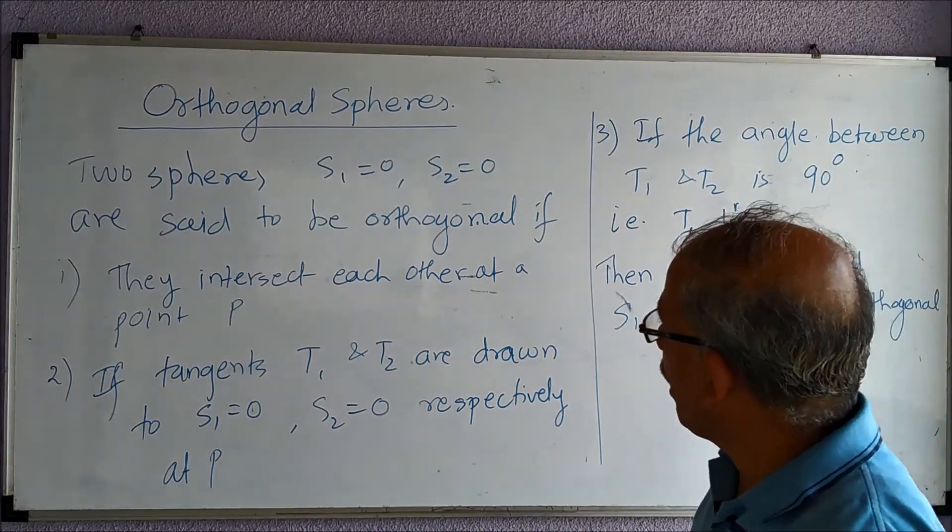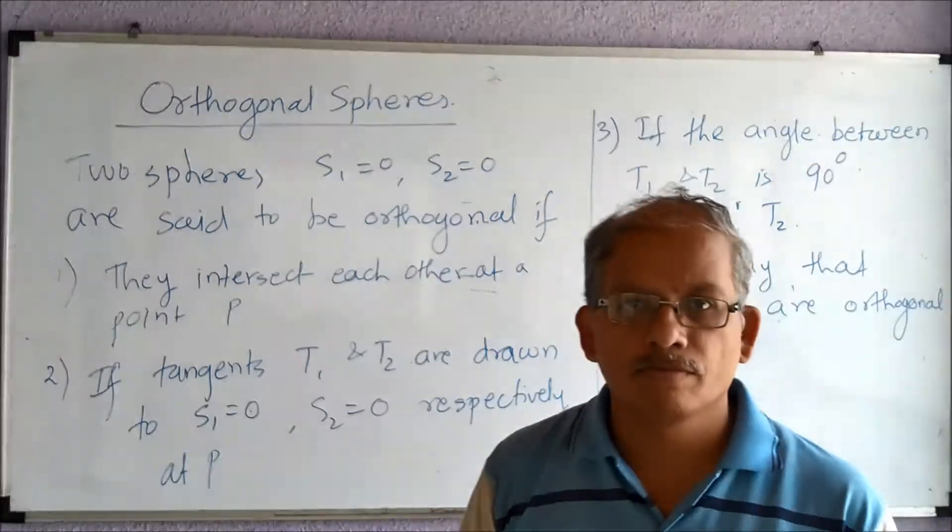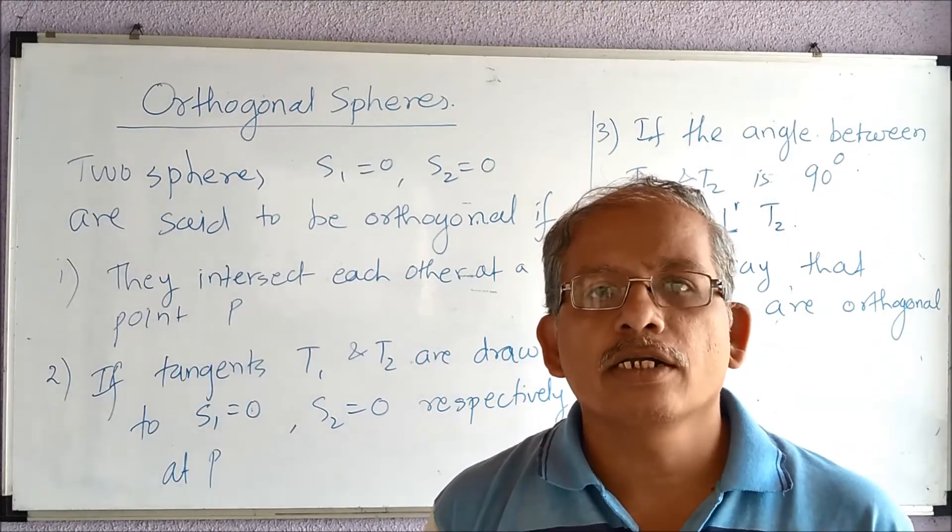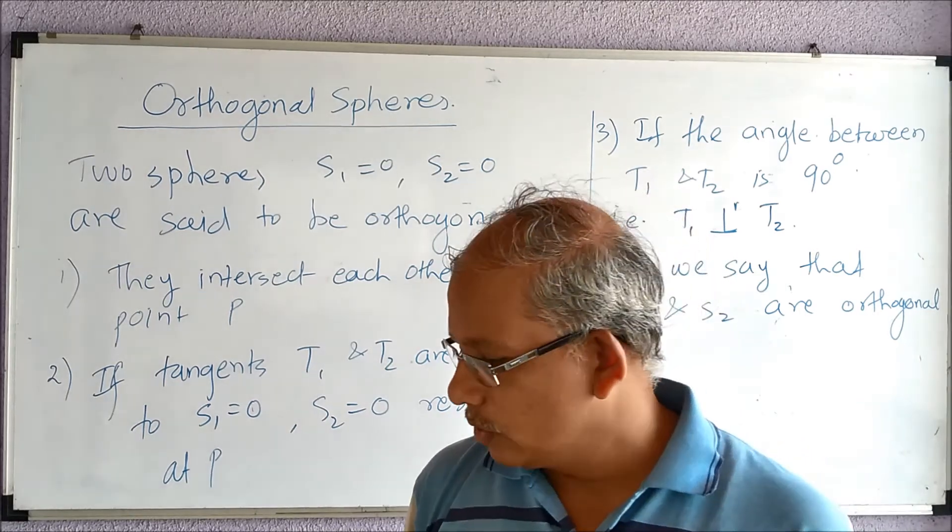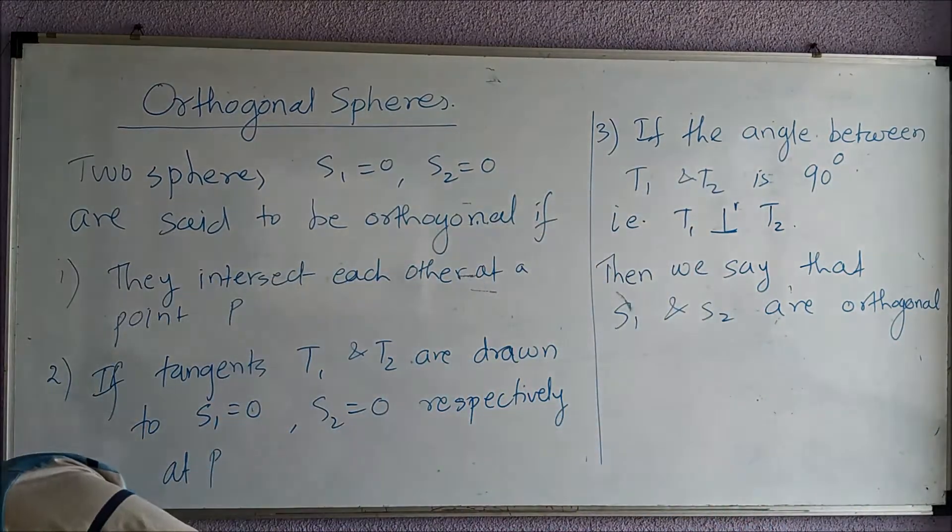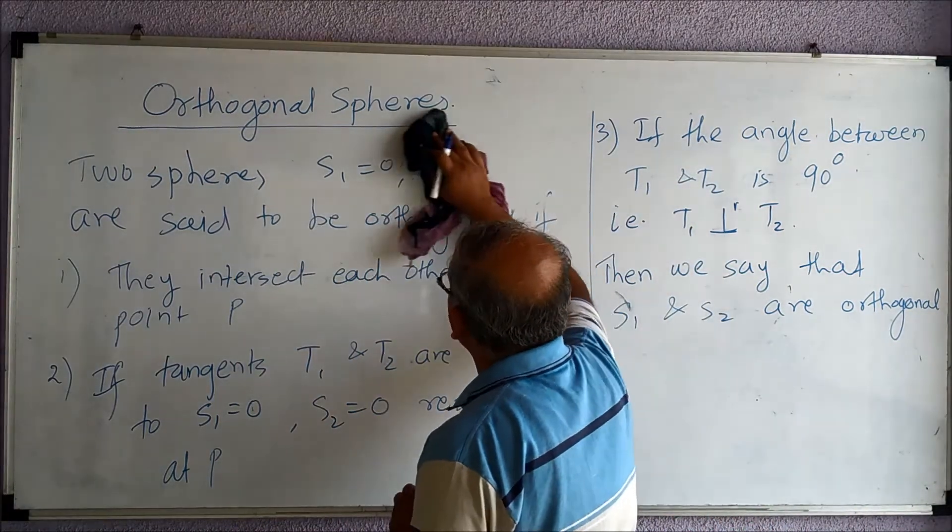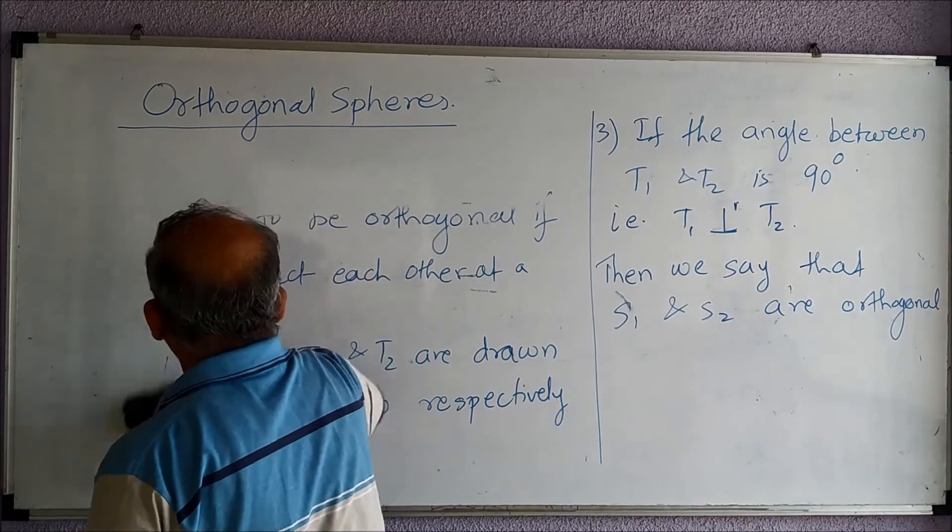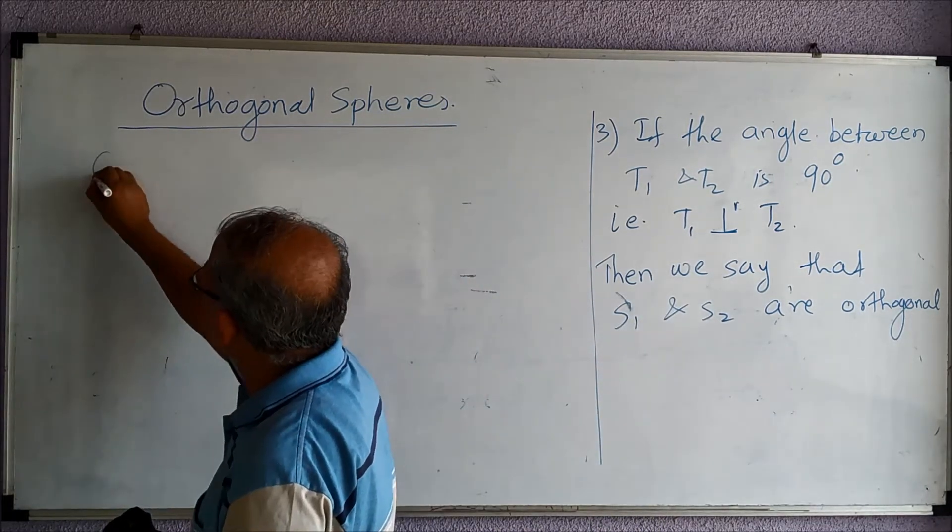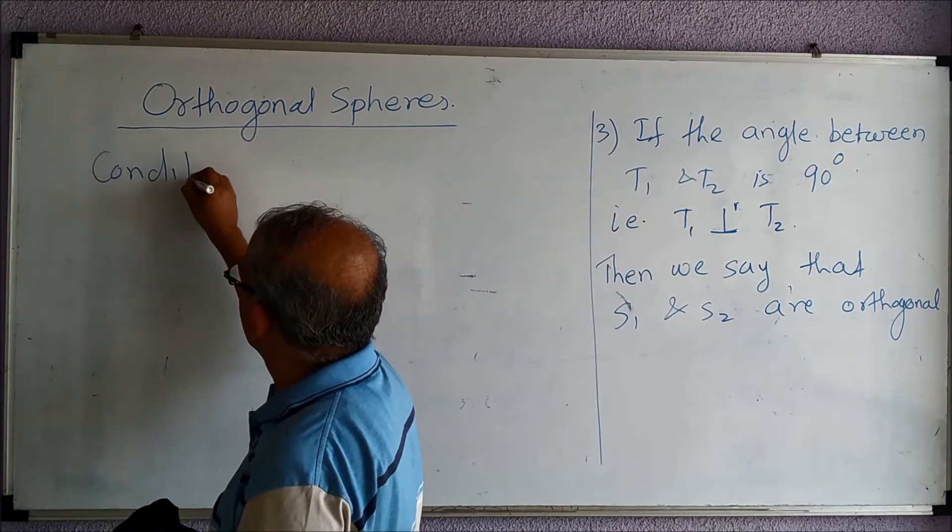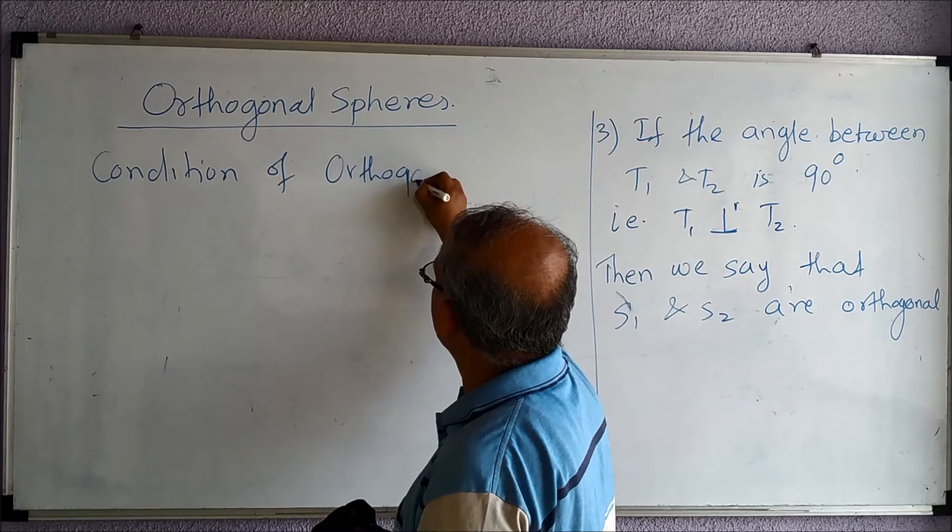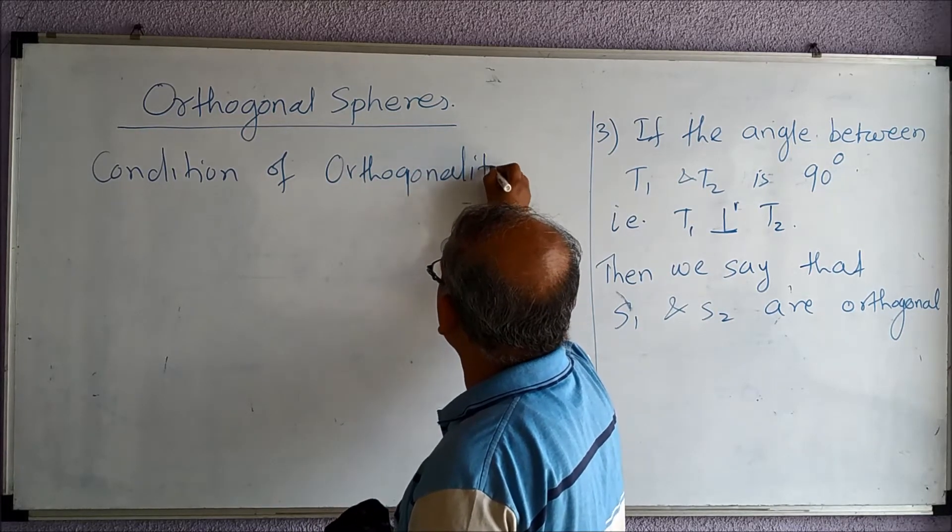If you have given any equations for two spheres, how will you identify whether they are orthogonal or not? For that purpose, there is a condition called the condition of orthogonality.